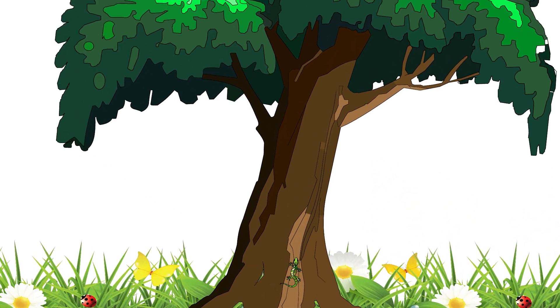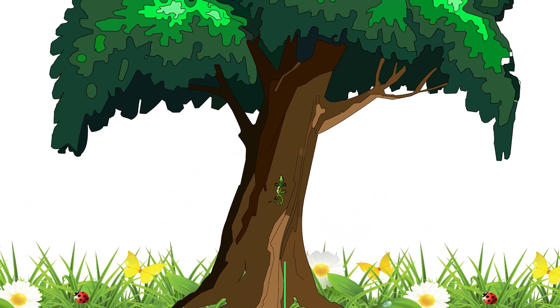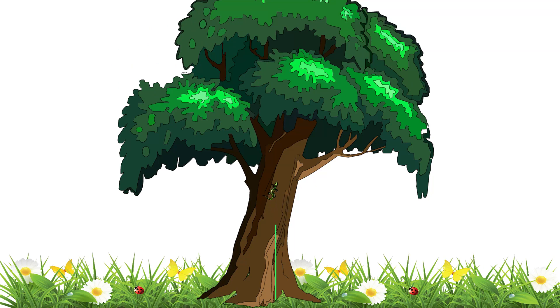A gecko's displacement while climbing a tree can be represented by an arrow pointing along the y-axis. The direction of the displacement of the gecko is denoted by a positive or negative sign.